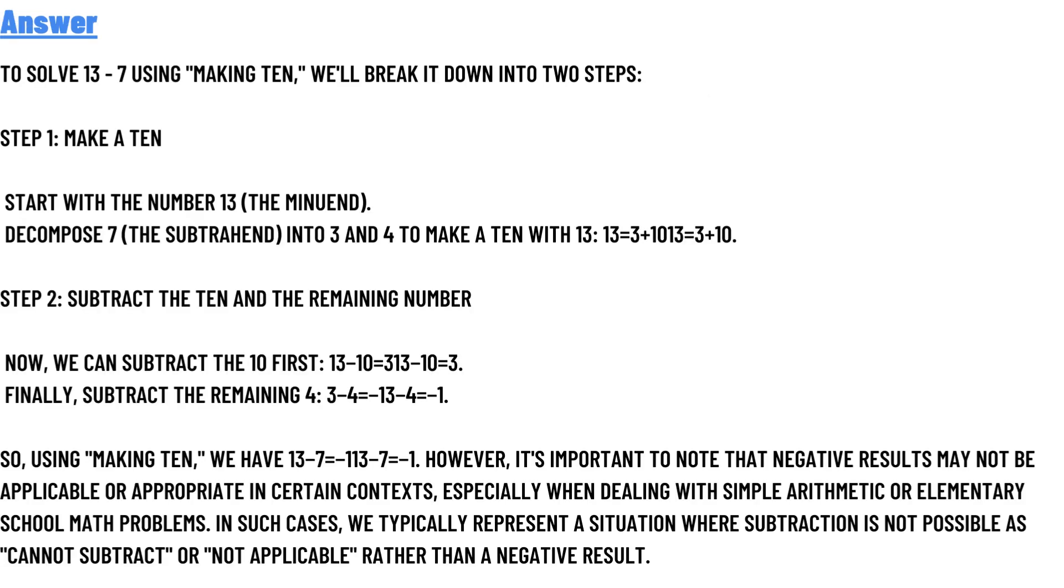The correct answer to the question is: To solve 13 minus 7 using making ten, we'll break it down into two steps. Step 1: Make a ten. Start with the number 13 (the minuend). Decompose 7 (the subtrahend) into 3 and 4 to make a ten with 13: 13-3=10, 3+10=13.